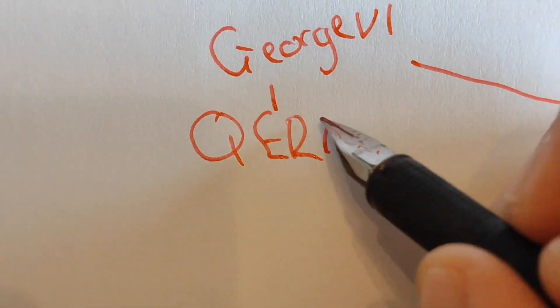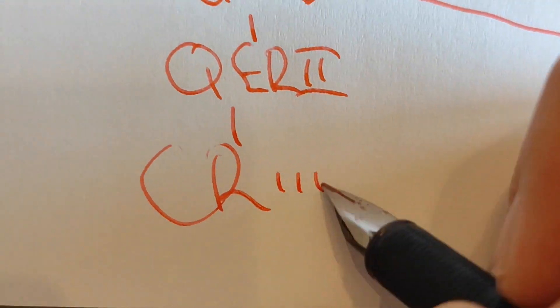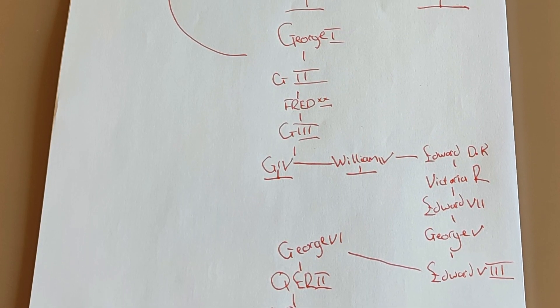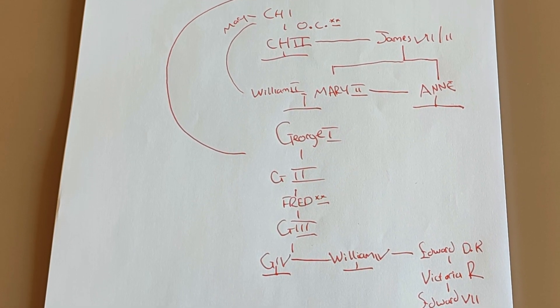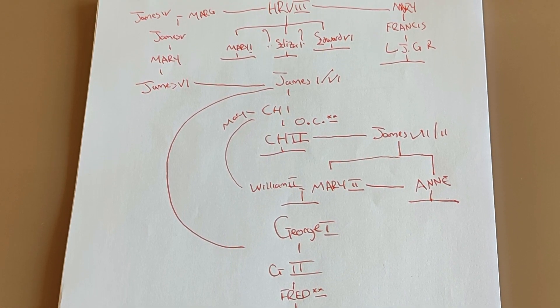And when she died, Charles III became king. So that is the very distant way that the royal family today is related to Henry VIII.